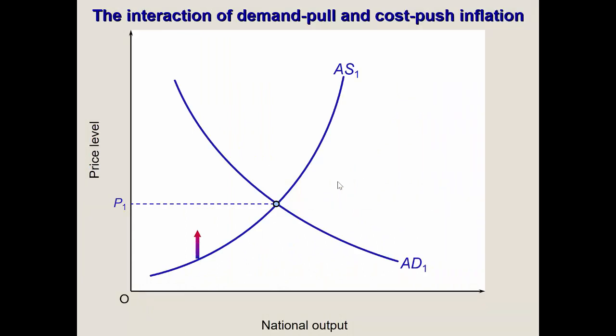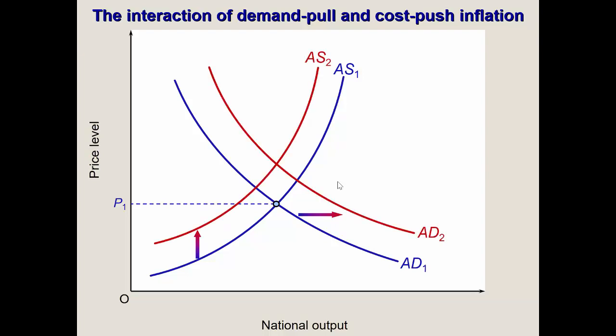So far we've held one curve constant while shifting the other. But it's also possible for both curves to change at the same time. For example, an aggregate supply shift could be followed by an aggregate demand shift. What happens is that output stays the same but prices keep rising — there is enough output but at a higher price. If it were just an aggregate supply shift, the new equilibrium would have lower prices and a lower amount of goods.